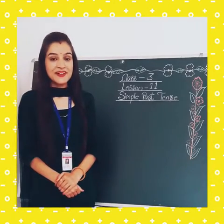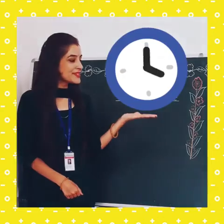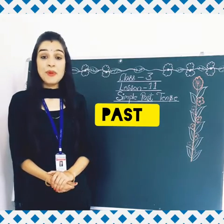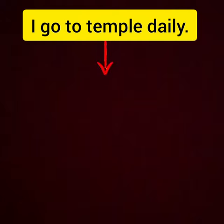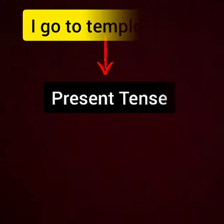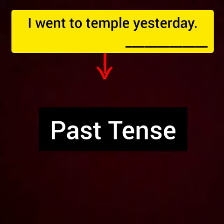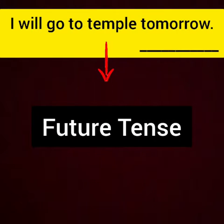So let's start. Whenever we are writing or speaking, there is always a reference to time. We talk about things in the past, present, and future. For example: 'I go to temple daily' is present tense. 'I went to temple yesterday' talks about something that has already happened in the past. 'I will go to temple tomorrow' talks about something that will happen in the future.